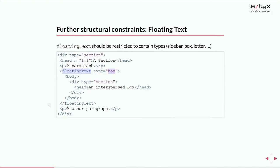Another thing the TEI community came up with is so-called floating text. After a div there must not be another paragraph, but sometimes you have structural units that are just floating in the surrounding text, like sidebars or boxes or a whole letter. Therefore they have floating text, and it's desirable for publishers to restrict the admitted type values for floating text.